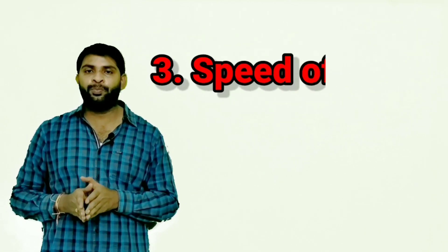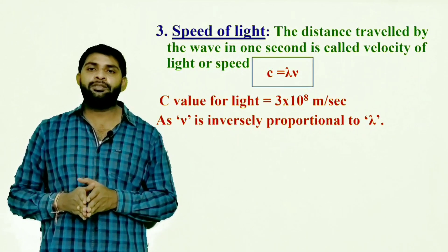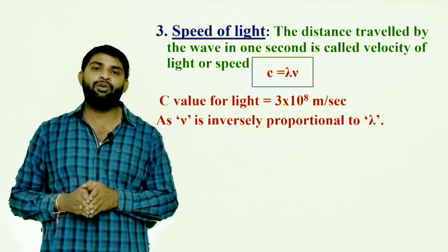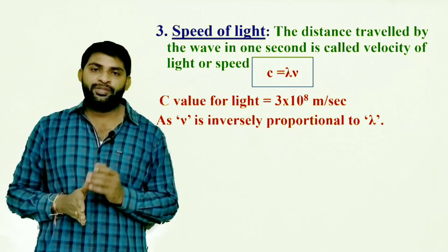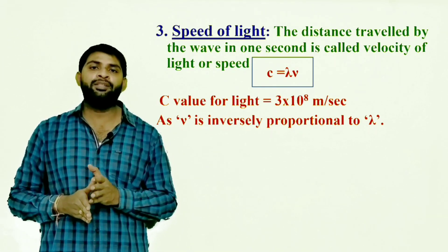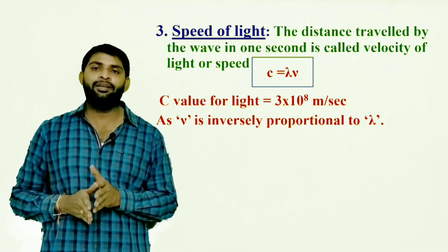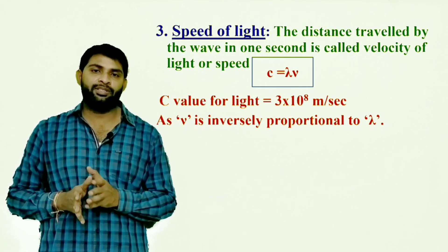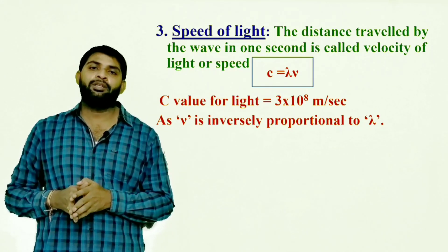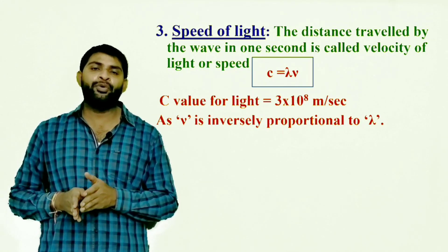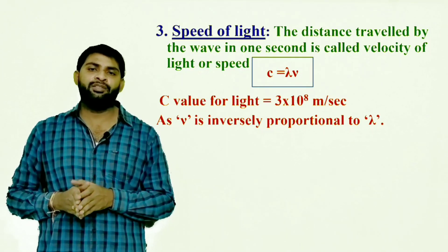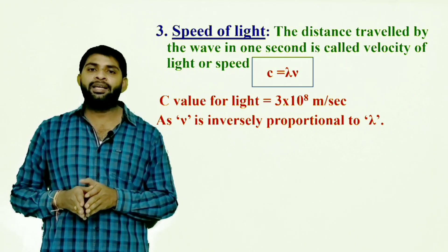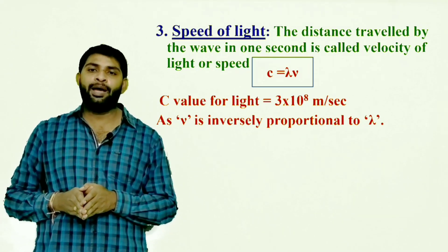Third property — speed of light: the distance traveled by the wave in one second is called the velocity or speed of light. It is given by C = λν. The speed of light is denoted by C, with a value of 3 × 10⁸ meters per second. Since nu is inversely proportional to lambda, a shorter wavelength corresponds to a higher frequency.